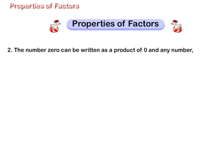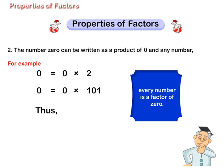Property 2: The number 0 can be written as a product of 0 and any number. For example, 0 is equal to 0 multiplied by 2. 0 is equal to 0 multiplied by 101. Thus, every number is a factor of 0.